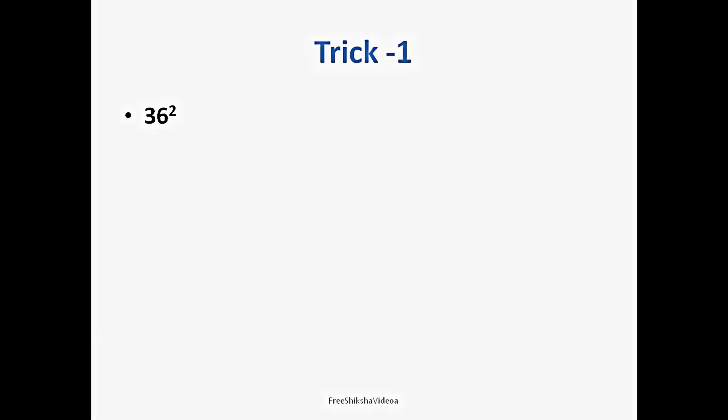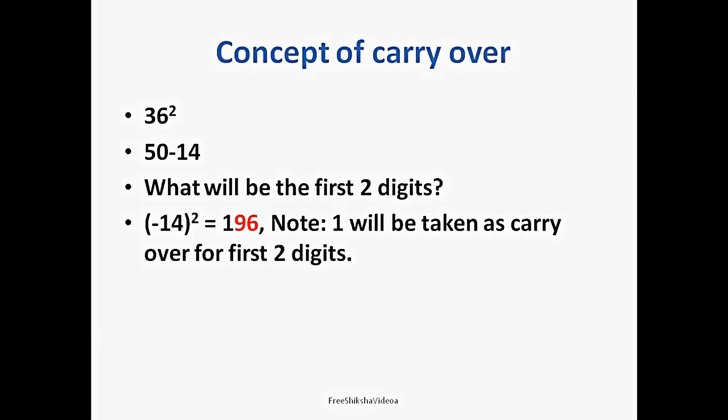Now something that you have to keep in mind is suppose we are finding the square of 36. It will become 50 minus 14. What will be the first two digits? Can you find that out? So we just have to do 14 square, and that is 196. So 96 will be the last two digits, and the 1 from 196 will be taken as a carry over for first two digits.